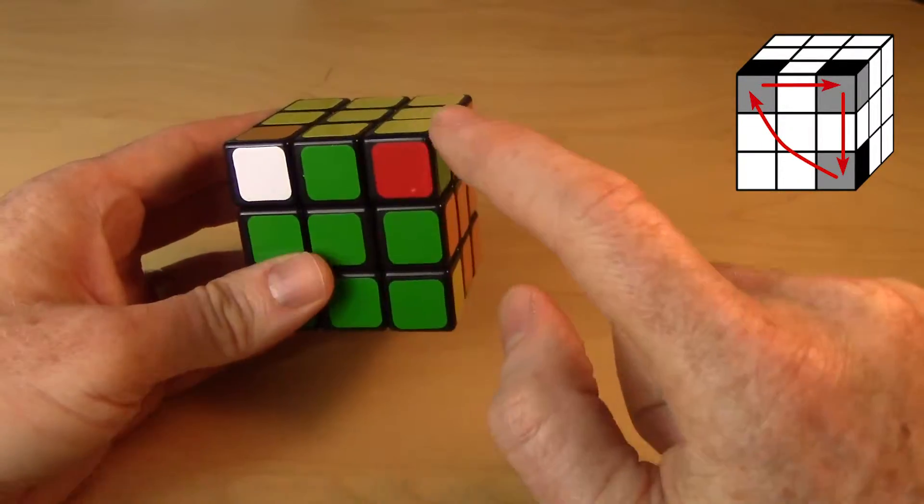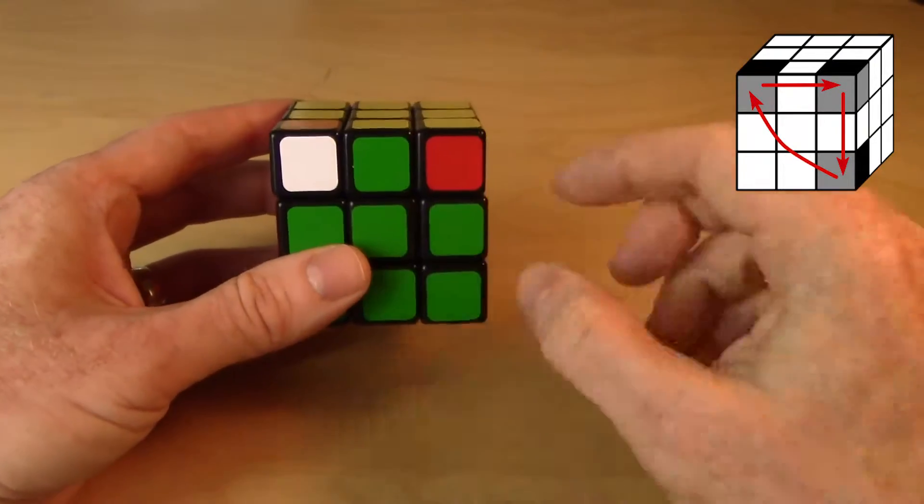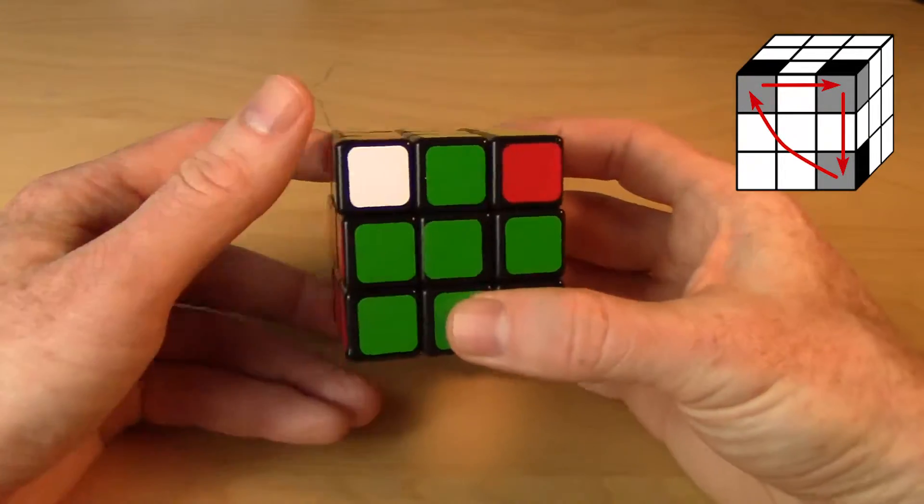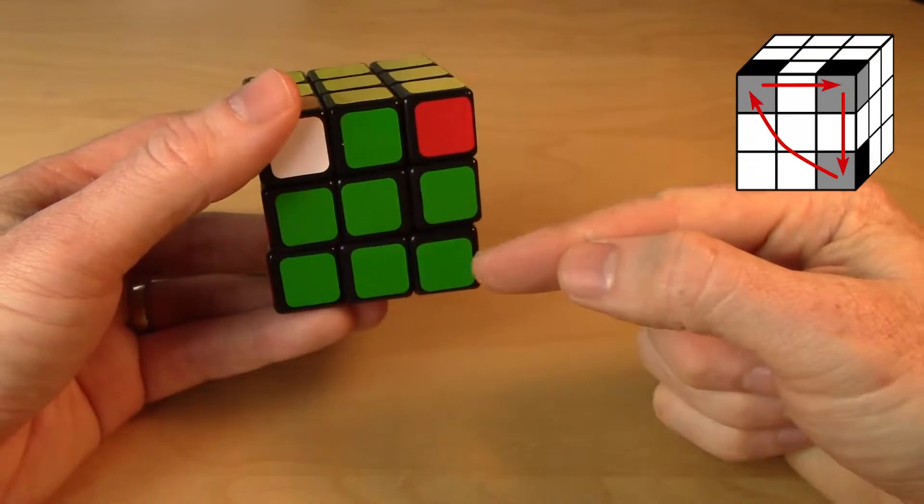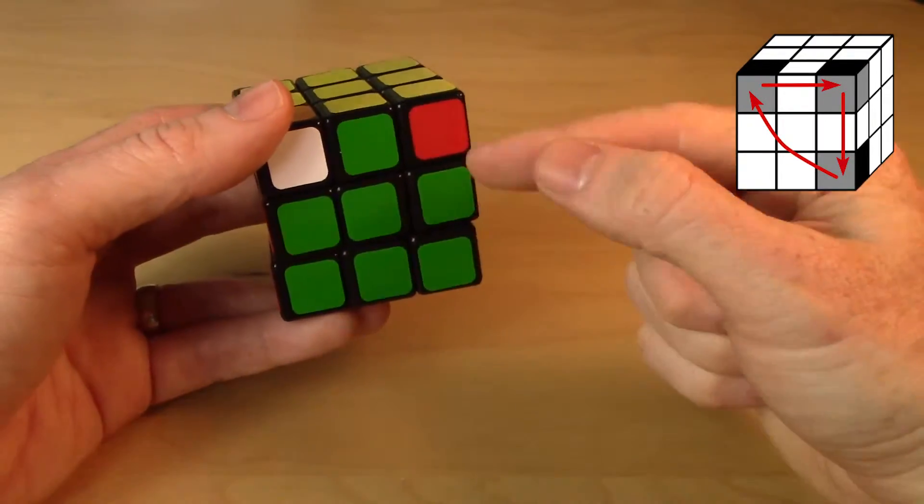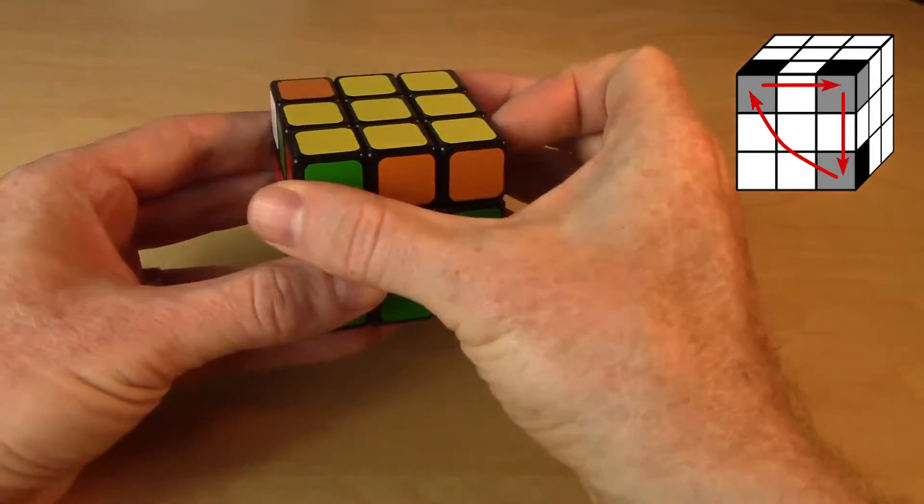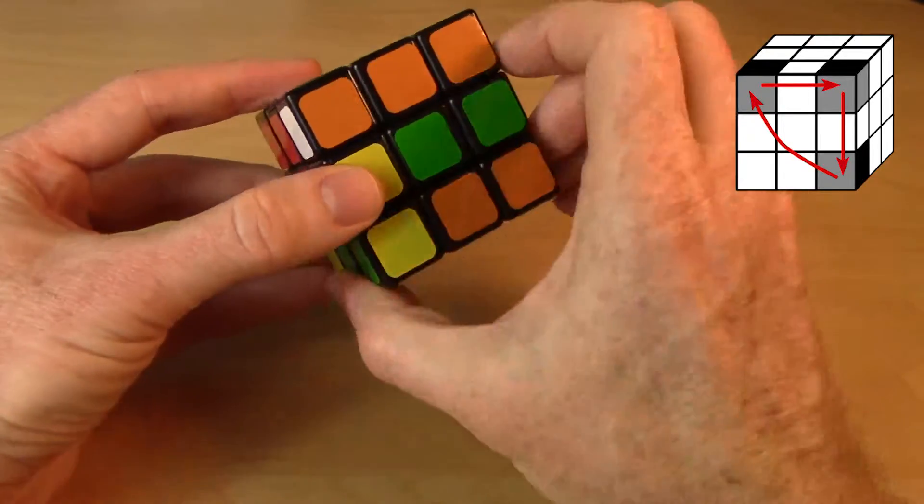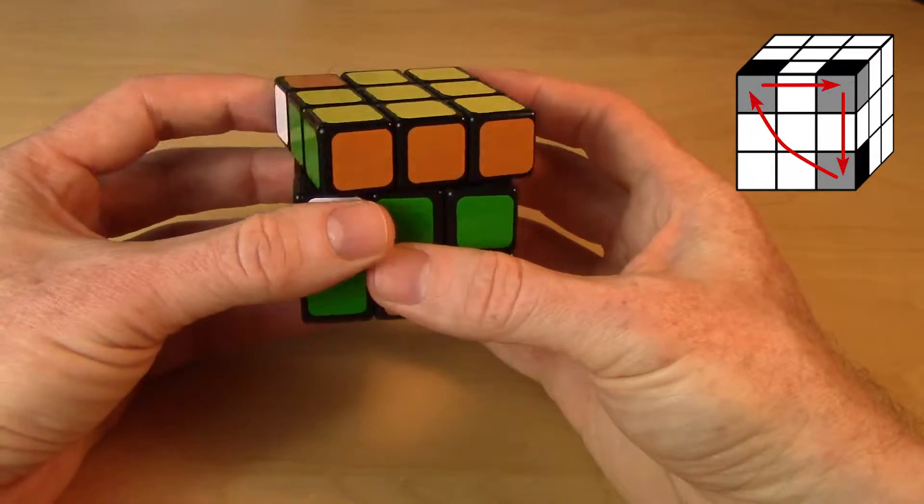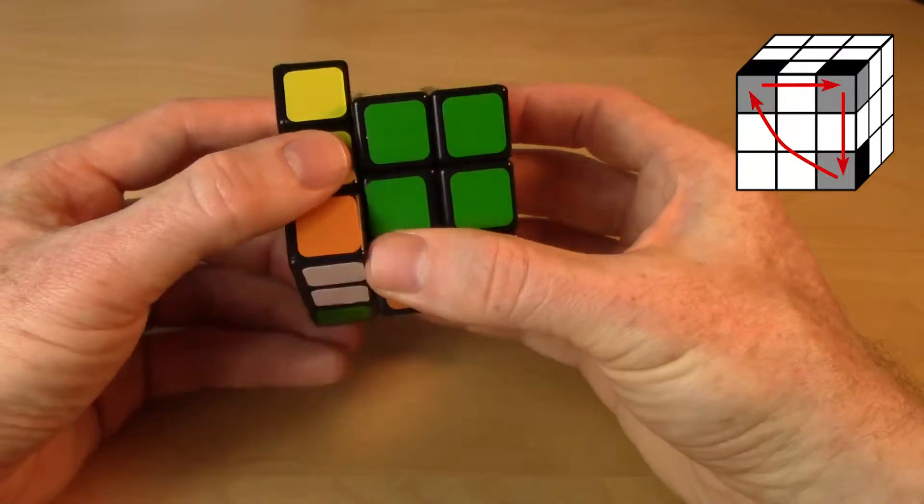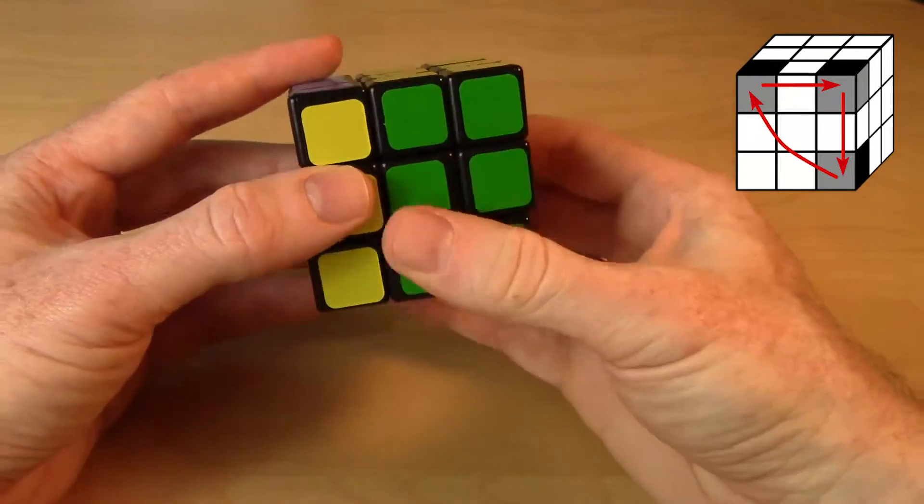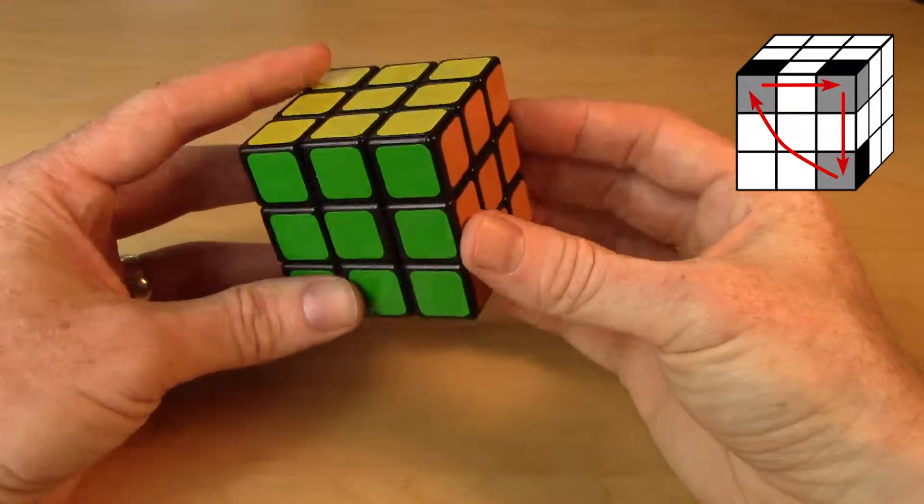And it cycled them around in this direction. This one went there, that one went there, that one went there. They went clockwise. If I wanted to do it counterclockwise, rather than sending this one up here first, I'm going to send it there. So I do the up move first, and then send it in, and then do the up move in reverse, and finish it off that way.